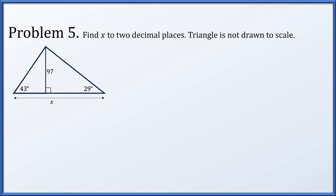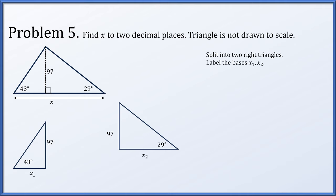In problem 5, we're asked to find x to two decimal places. The triangle is not drawn to scale. Incidentally, you should never assume that something is drawn to scale unless you are told that. So let's split this into two right triangles, with that height of 97 going into both triangles. Let's label the bases of those two triangles, x1 and x2, and note that in our original triangle, x1 plus x2 is the missing x.